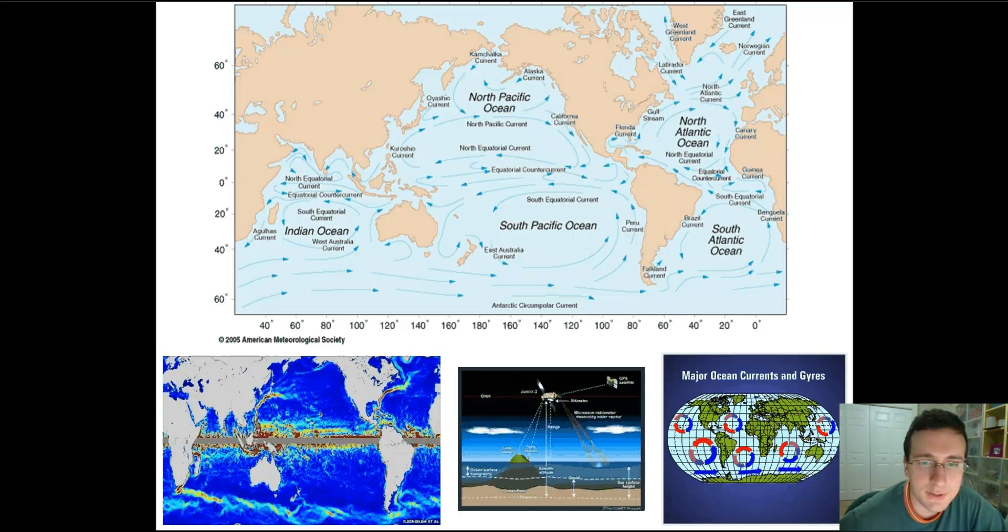Now, this current is then going to move north along the eastern seaboard of the U.S. and carry heat all the way to Canada and eventually into Europe. It becomes what we call the North Atlantic Current, where it's much colder already because it receives a blast of water from the Labrador Currents and the East Greenland Currents, which are very cold.